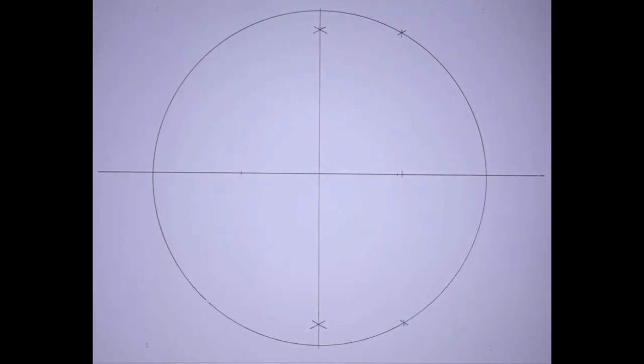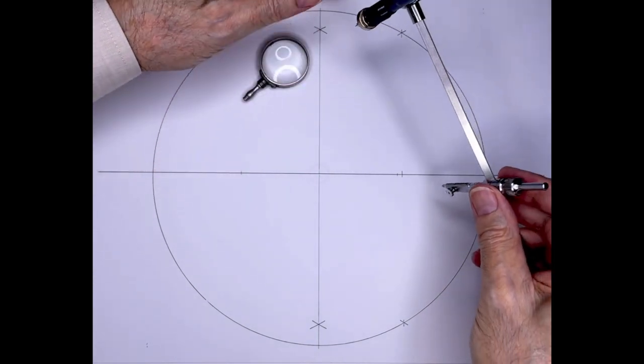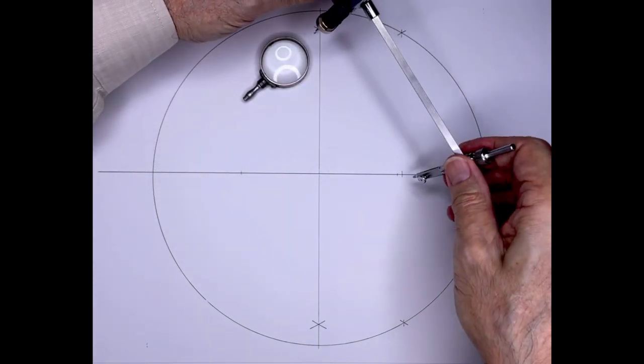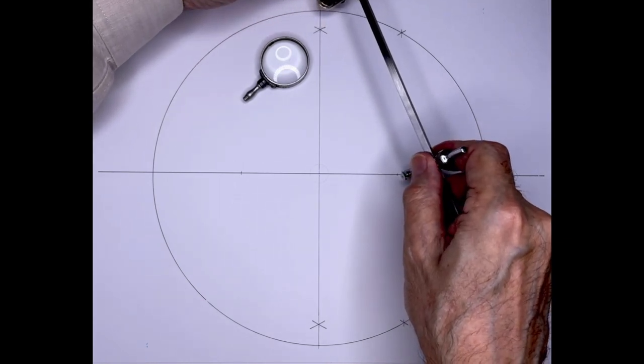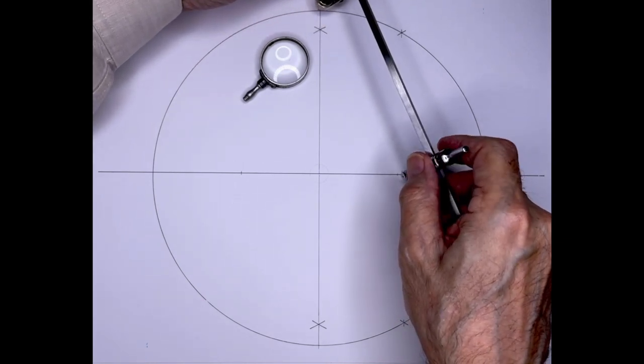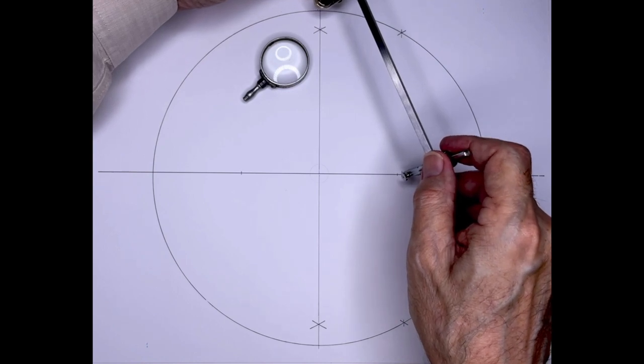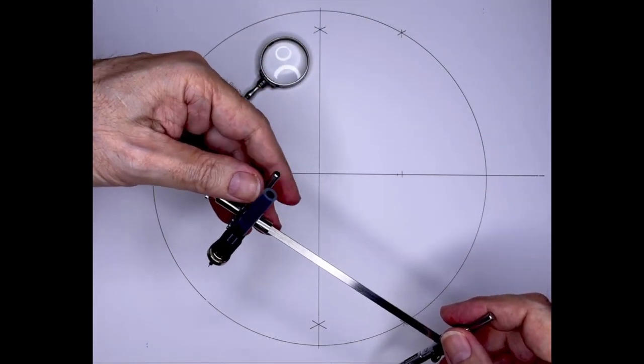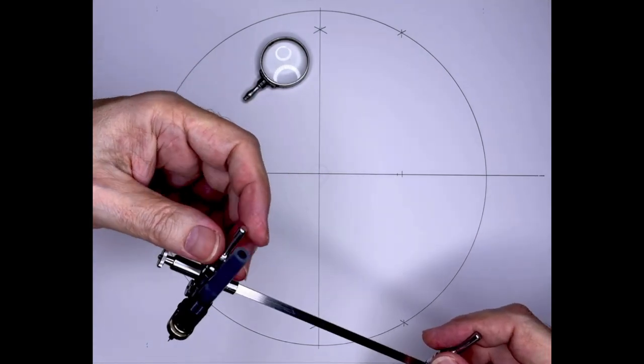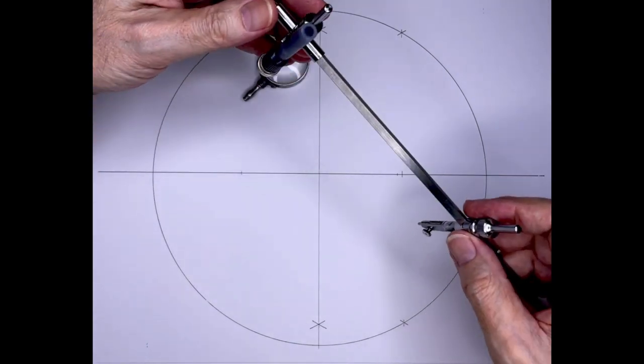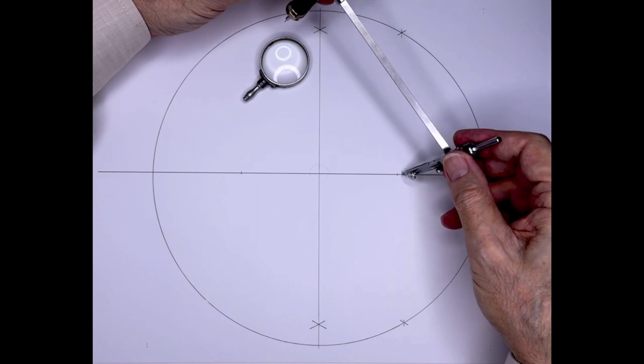Our last point marked for our compass work. This is the same as the pentagon construction. What we're doing here is, if you consider the radius of this circle two, we are constructing a one, two, square root of five triangle. So this leg that we're now constructing is the square root of five in a circle of radius two.